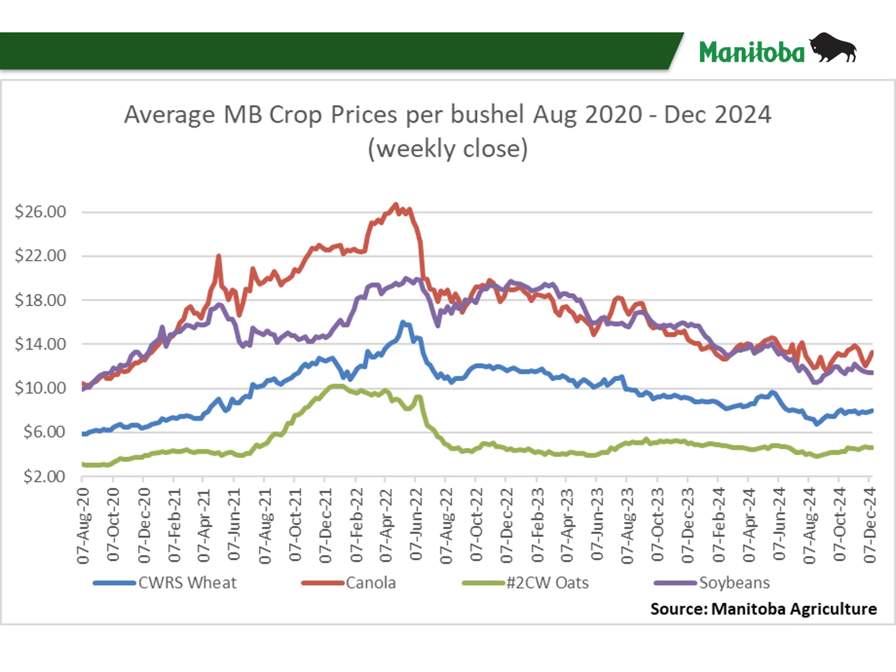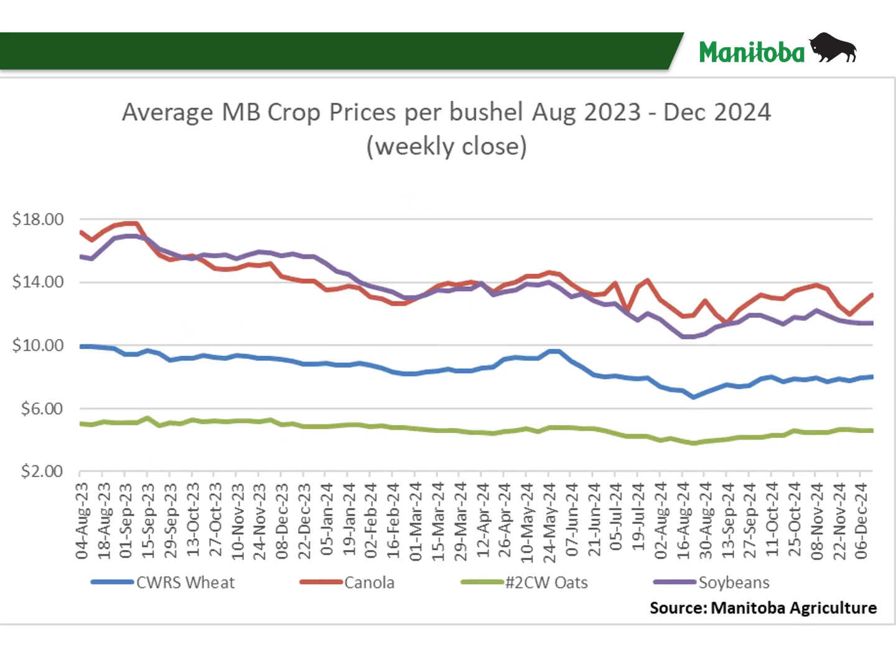Let's zoom in and look at the last crop year and a half from August 2023 to date. Focusing in on August 2023 to December 2024 crop pricing, we can see that price deterioration continues. For example, canola was around $17 per bushel at the start of the 2023 crop year and is currently below $14 per bushel. Hard red spring wheat was around $10 per bushel at the beginning of the 2023 crop year and is now around $8 per bushel. Oat pricing has held on relatively well with only a minor deterioration in this period.